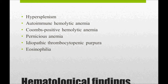The hematological findings are very important for autoimmune hepatitis. There is hypersplenism. In USMLE Step 3 they may give the diagnosis and ask which findings could be seen in this patient. Autoimmune hemolytic anemia — Coombs-positive — can be seen, along with pernicious anemia, idiopathic thrombocytopenic purpura, and eosinophilia. Remember eosinophilia — it is a very important point.